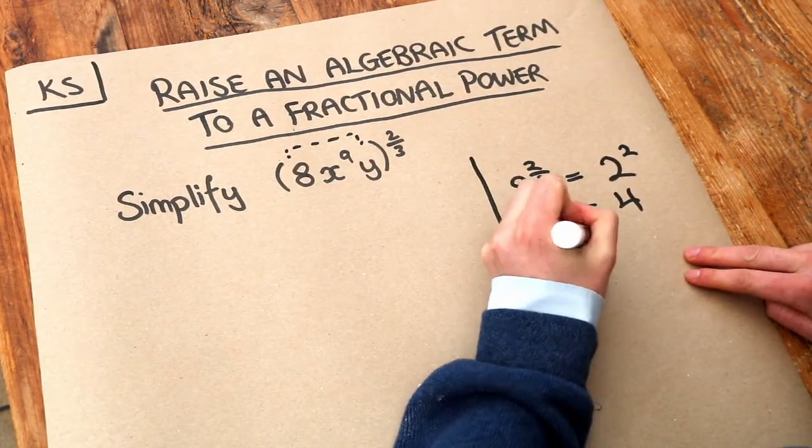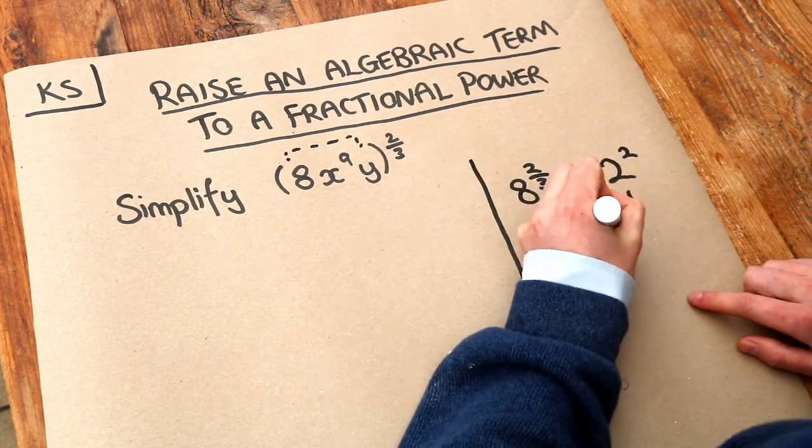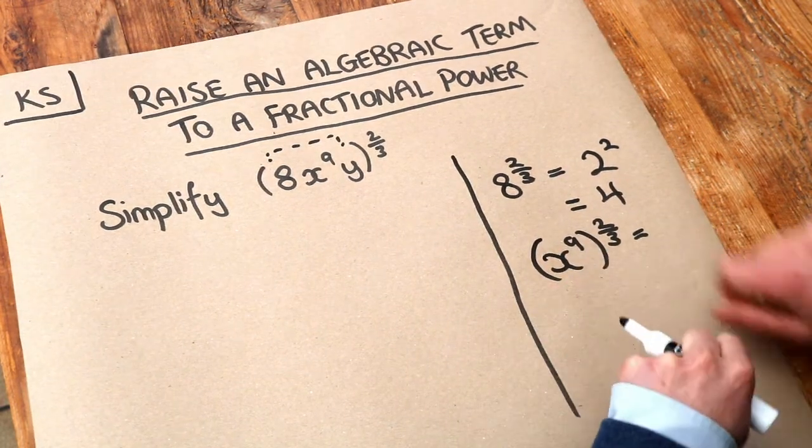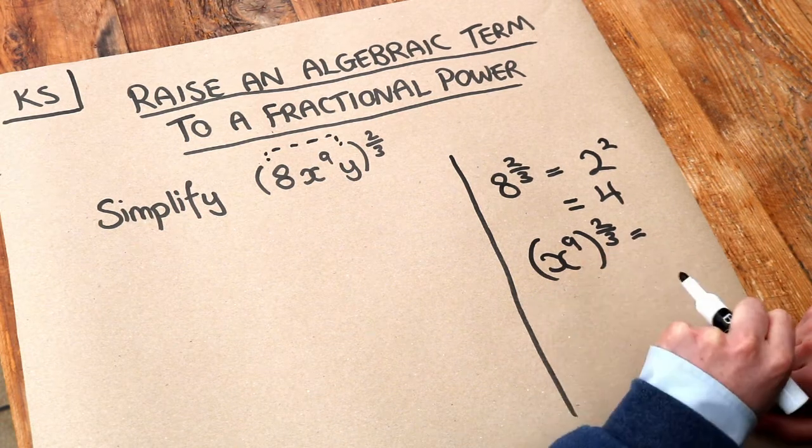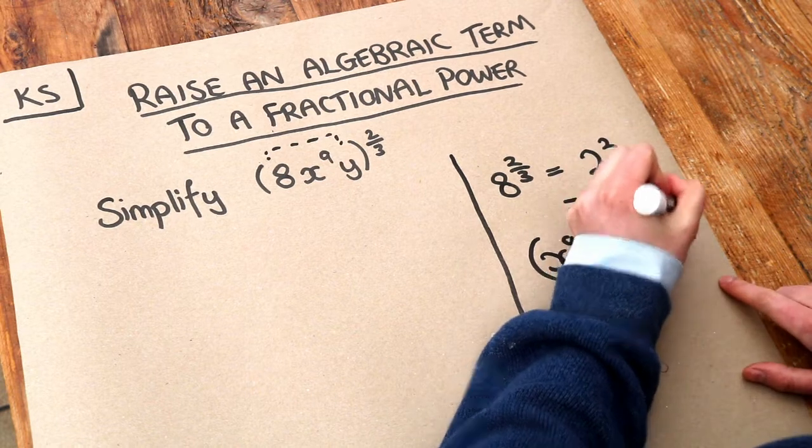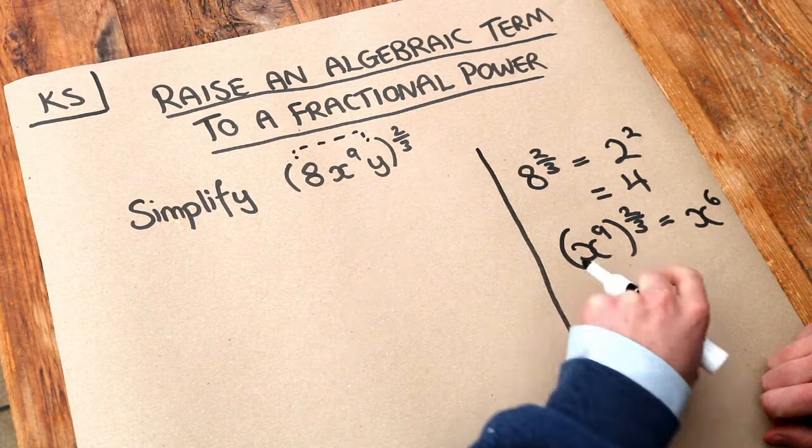Then we've got x to the 9, and we've got this sort of bracket around it, x to the 9 to the power of two-thirds. Now when we raise a power to a power we just multiply those indices together. 9 times two-thirds, or another way of saying that is what's two-thirds of 9, which is 6. So we have x to the power of 6, and then finally we're going to have the y to the two-thirds.